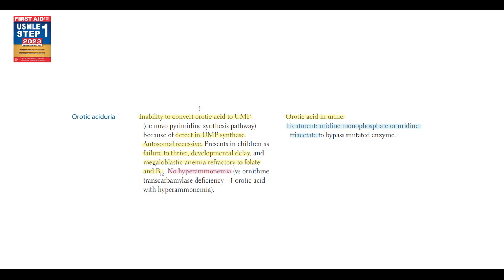Erotic acid urea is a genetic disorder, and the major feature of this disease is the inability to convert erotic acid to uridine monophosphate due to the defect in uridine monophosphate synthase. So let's discuss the pathogenesis of this disorder in details.